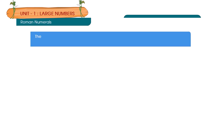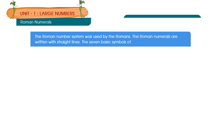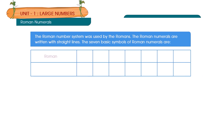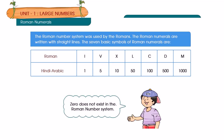Roman numerals. The Roman number system was used by the Romans. Roman numerals are written with straight lines. The 7 basic symbols are: I = 1, V = 5, X = 10, L = 50, C = 100, D = 500, M = 1000. Zero does not exist in the Roman number system.